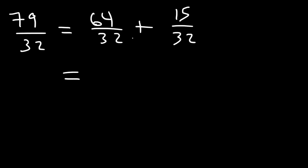Now 64 divided by 32 is 2. So it's 2 plus 15 over 32. And so the final answer is 2 and 15 over 32 as a mixed fraction.